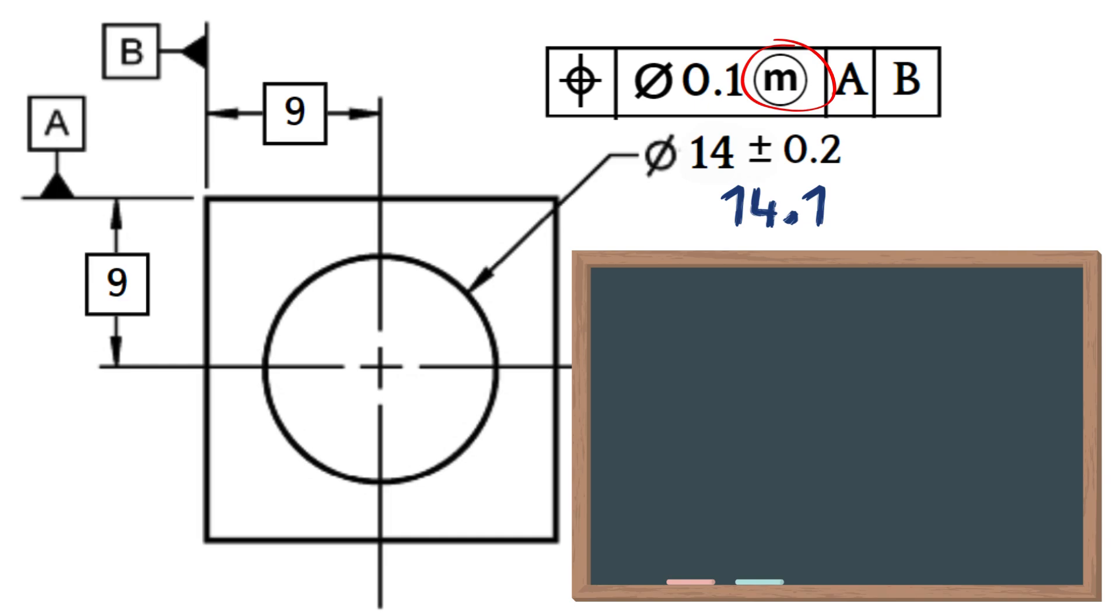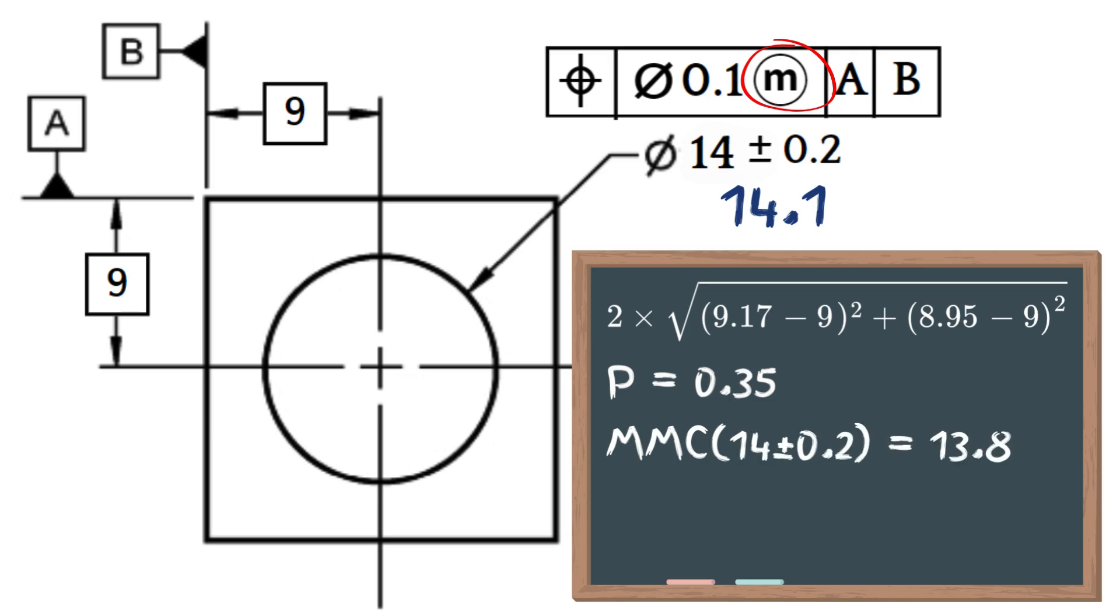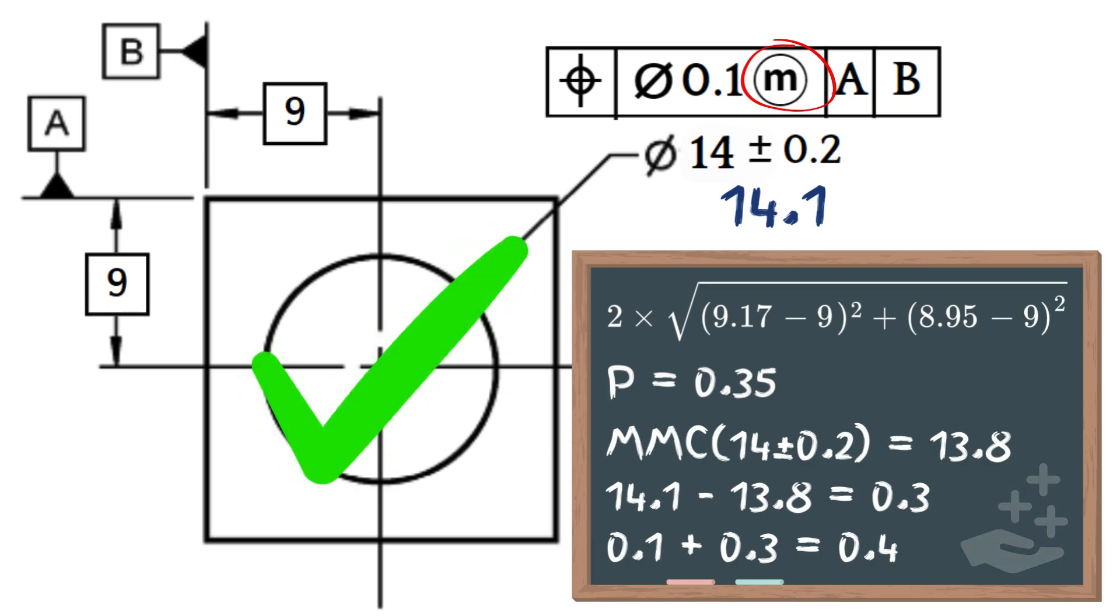The position formula and calculation are the same and are still 0.35. But as I explained, the 0.1 position tolerance is now linked to 13.8, which is the MMC of the bore. Since the measured bore diameter of 14.1 is 0.3 larger than the MMC, we can add this 0.3 to 0.1, and the new position tolerance is now 0.4. This extra is nicknamed the bonus tolerance. Since 0.4 is larger than 0.35, the part is now okay.